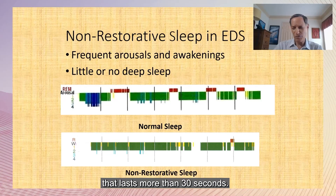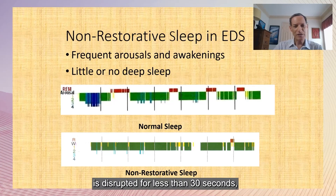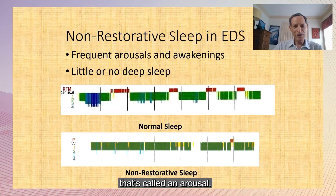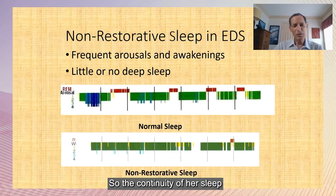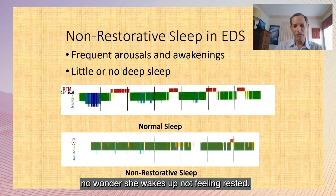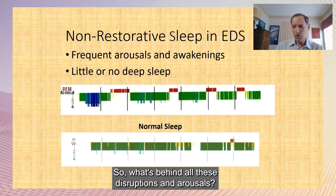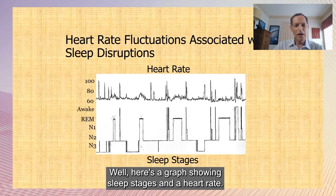In the sleep lab, an awakening is defined as a disruption to the continuity of sleep lasting more than 30 seconds; disruptions under 30 seconds are called arousals. In this sleep study, the patient had 23 awakenings and 125 arousals — the continuity of her sleep was disrupted almost 150 times. Imagine someone tapping on your shoulder every three or four minutes all night long. No wonder she wakes up not feeling rested.